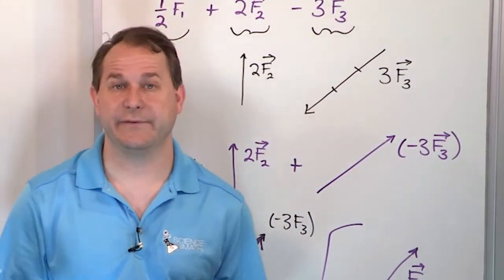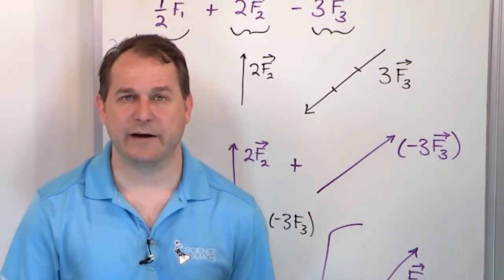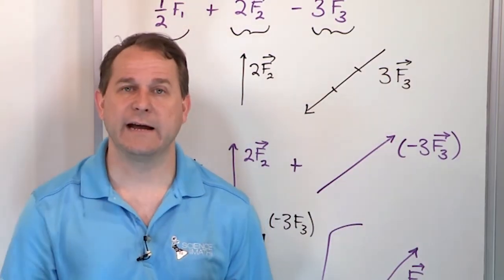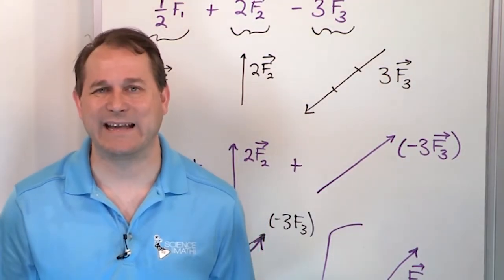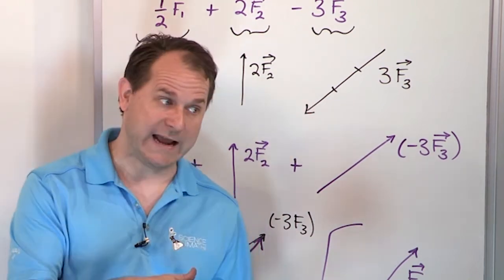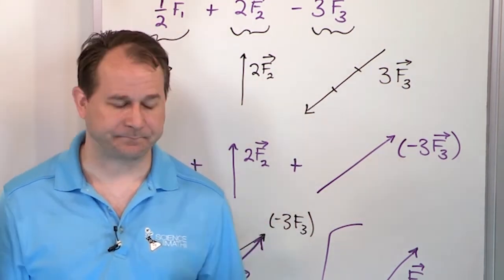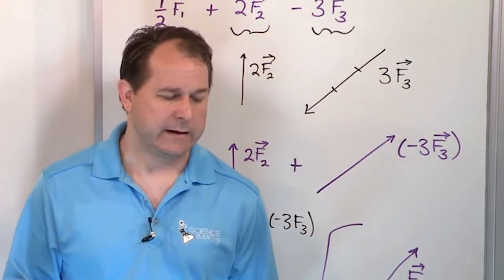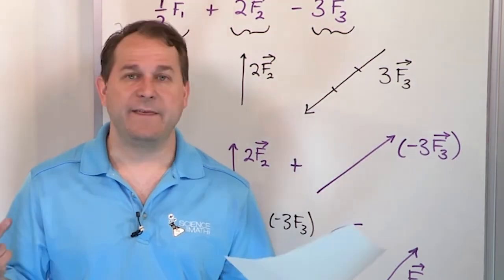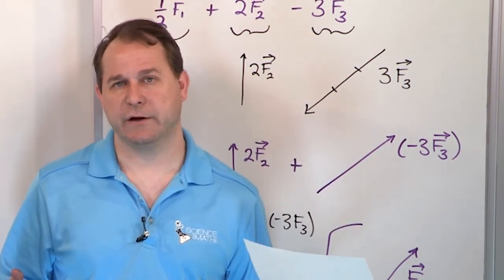So we've covered adding vectors. We've covered subtracting vectors. We've covered multiplying a vector by a number, which means multiplying by a scalar, which could be one half or decimal or multiplying by a positive number or by a number, I should say. And then we've done addition on all of those.